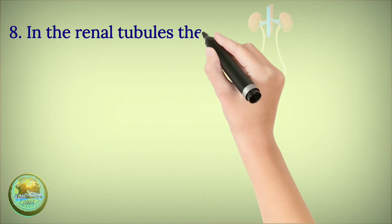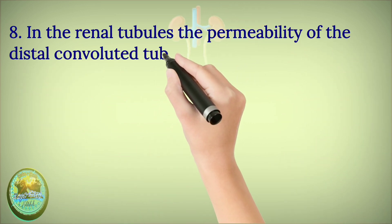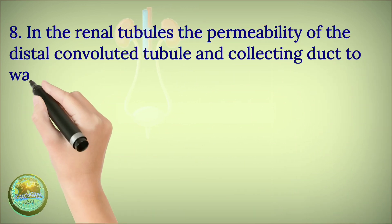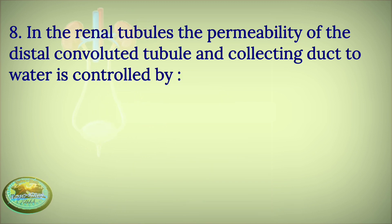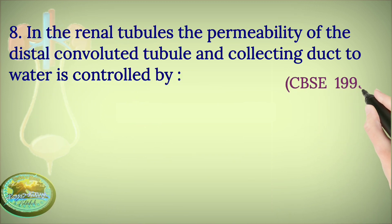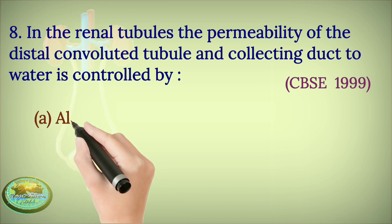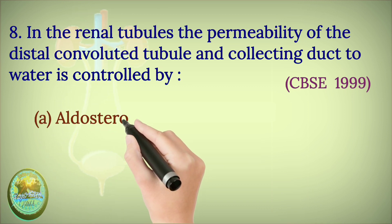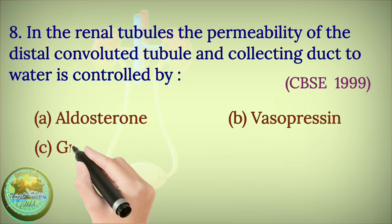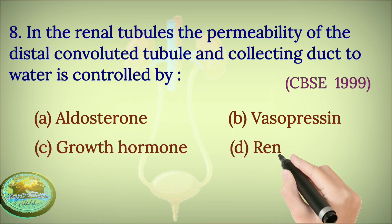Question 8: In the renal tubules, the permeability of the distal convoluted tubule and collecting ducts to water is controlled by the hormone — aldosterone, vasopressin, growth hormone, or renin?